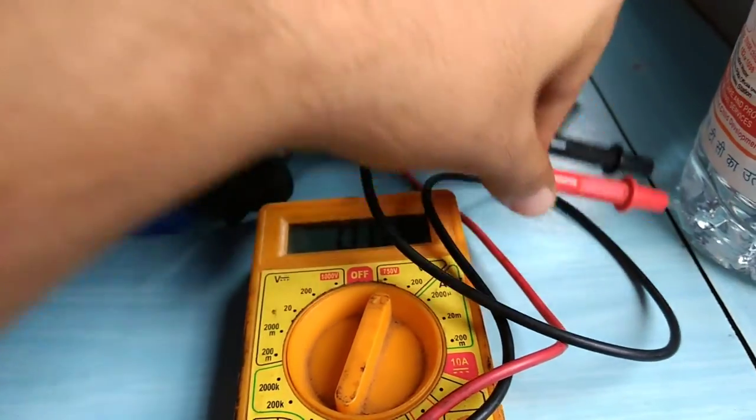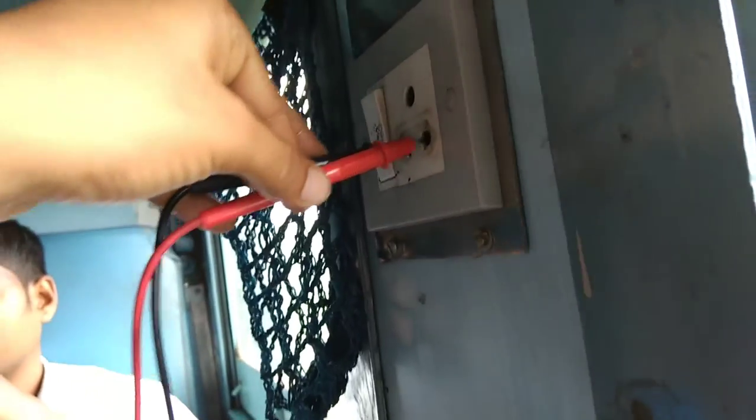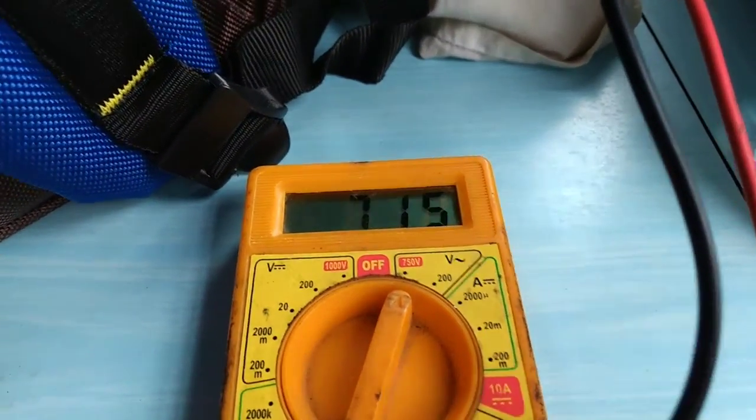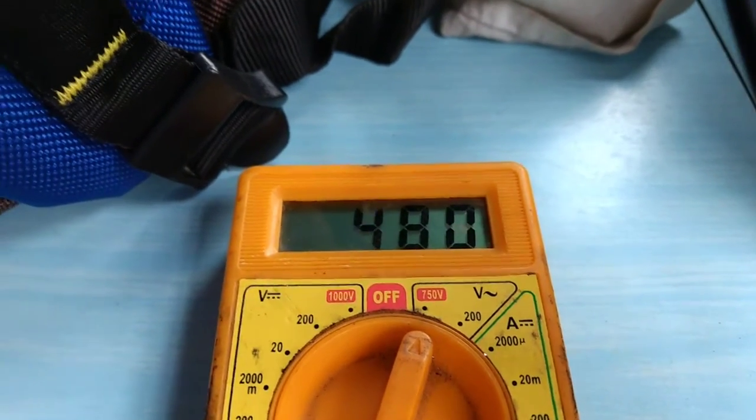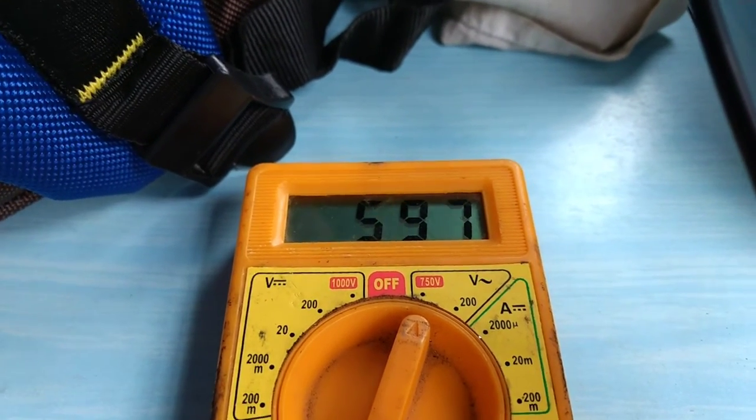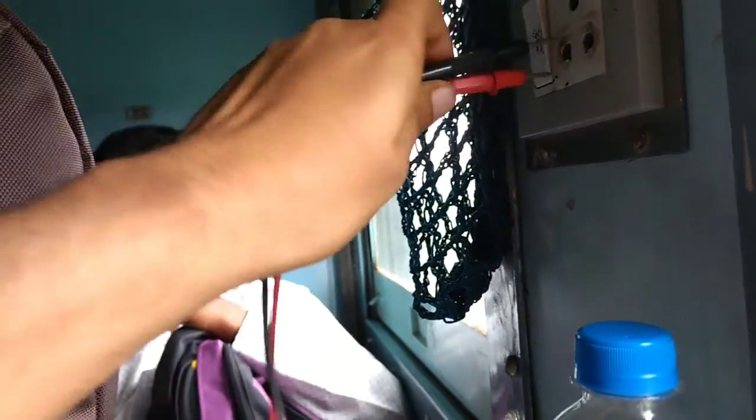So I have shifted this knob to the AC voltage rating. Now let's see what is the output. Surely there is some visible rating available in this voltmeter. But still it's a DC output. So how is it working?